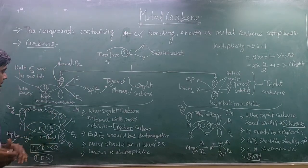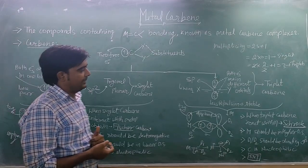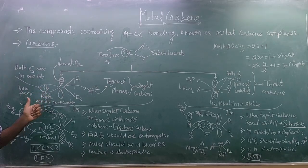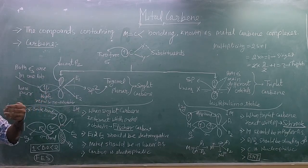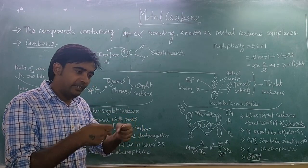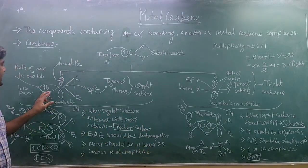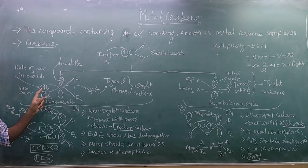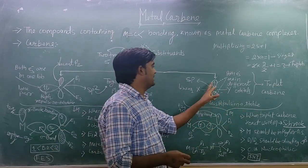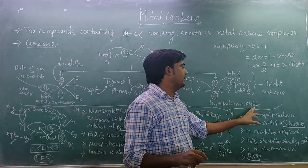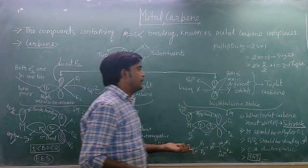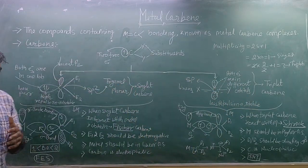Now talking about stability — which carbene is more stable? In singlet carbene, two electrons are present in only one orbital, so according to Hund's rule they feel some repulsion. When repulsion increases, the energy of the molecule increases, and stability decreases. In triplet carbene, both electrons are in different orbitals, so there is less repulsion, less energy, and higher stability. Therefore, triplet carbene is more stable than singlet carbene.